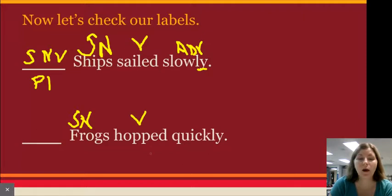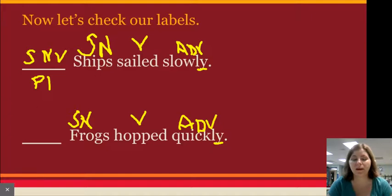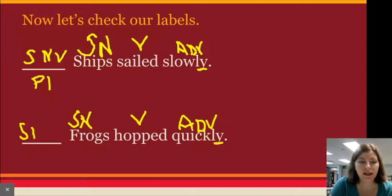Hopped how quickly? Again, we have the LY as our clue. And it is an adverb. We label it or classify it with an ADV. Now, we need to do our pattern on the line. Again, because it's pattern one, we just need the nitty gritty of the pattern on the line. So, subject noun and a verb. And our pattern one.